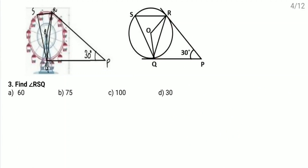Third question: find angle RSQ. Already in the first question we found angle ROQ as 150 degrees. Now, the central angle is 150 degrees. This arc is subtending this angle at the center, and the same arc is subtending angle RSQ on the remaining part of the circle. In 9th standard you learnt that the angle on the remaining part of the circle is half that of the central angle subtended by the same arc. So as this angle is 150 degrees, obviously angle RSQ is half of that, which comes as 75 degrees — option B is correct.